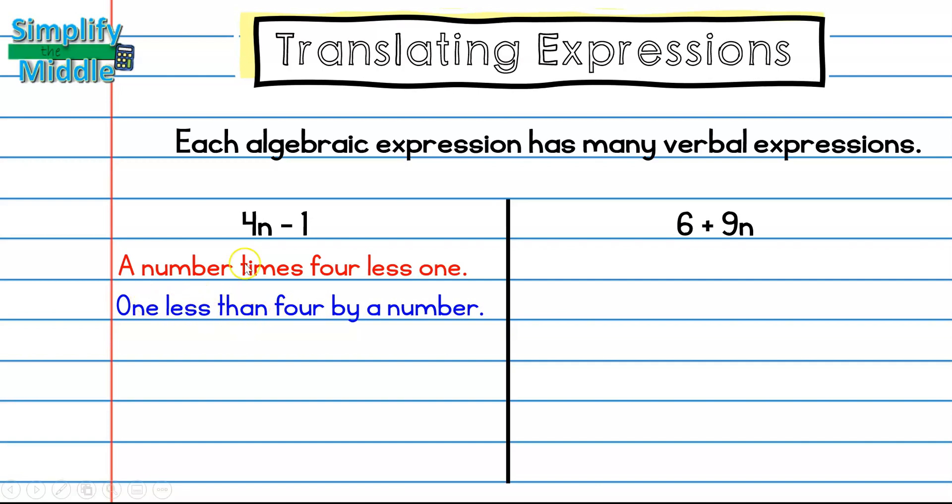I could also have written this as one less than four by a number. So one less than, so I know the one is going to go at the end because it's less than, and then four by a number. Well, the word by means to multiply. So I have four and a variable. So same thing. Our last verbal expression example for this one is the product of four and a number minus one. Now, this does not represent all of the verbal expressions that you could have for this particular algebraic expression. It just shows you that there's several different ones you can use, and they all mean the same thing.